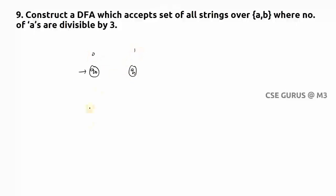One is q0, which is a zero remainder state. q1 is a one remainder state, and I'll take q2 which is two remainder state.